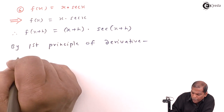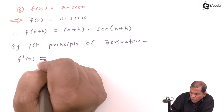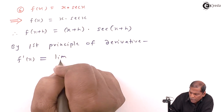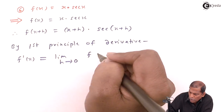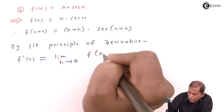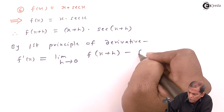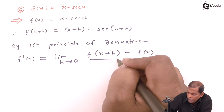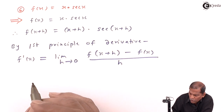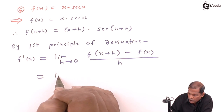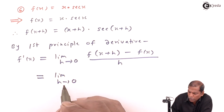We have f'(x) is equal to the limit as h tends to 0 of [f(x+h) minus f(x)] upon h.